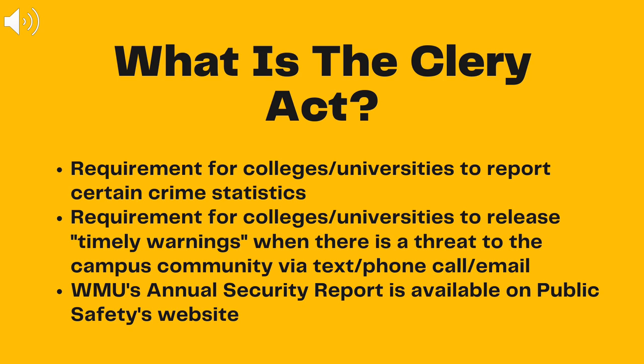Colleges and universities must report crimes falling under the following categories: homicide, murder and manslaughter, sex offenses such as sexual battery, sexual assault, rape, statutory rape, and incest, robbery, aggravated assault, burglary, motor vehicle theft, arson, domestic violence, dating violence, stalking, and hate crimes. You can review WMU's annual security report on Western Michigan University's Public Safety website.